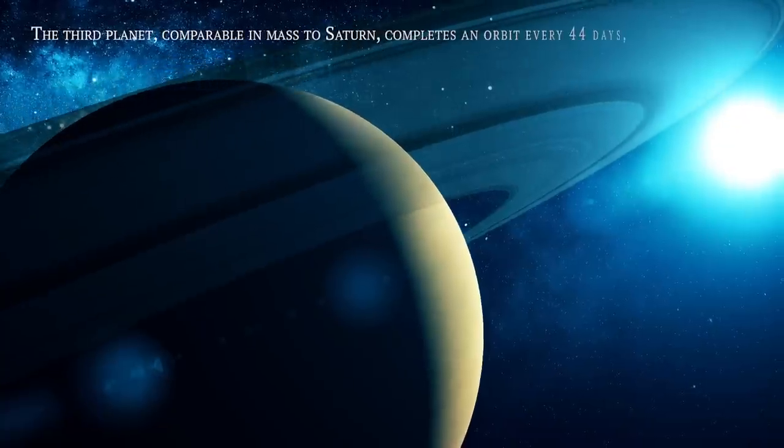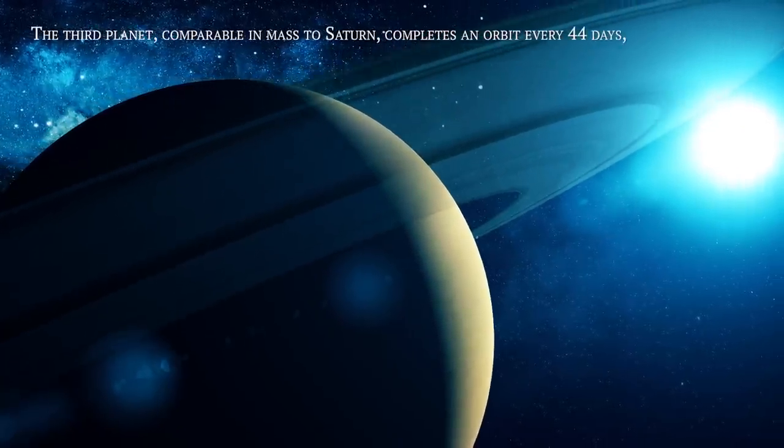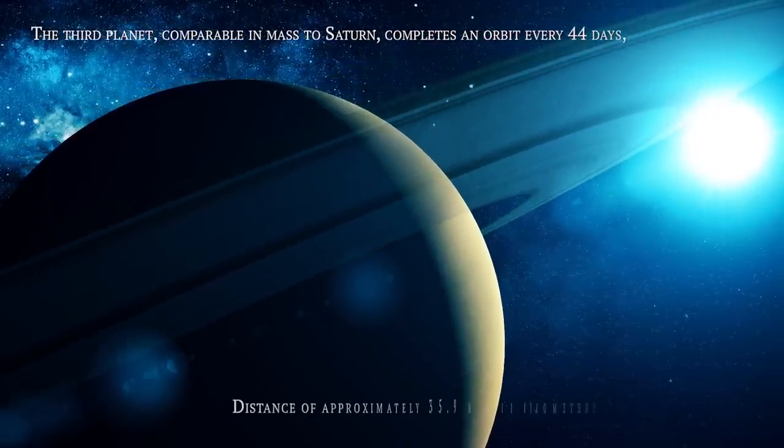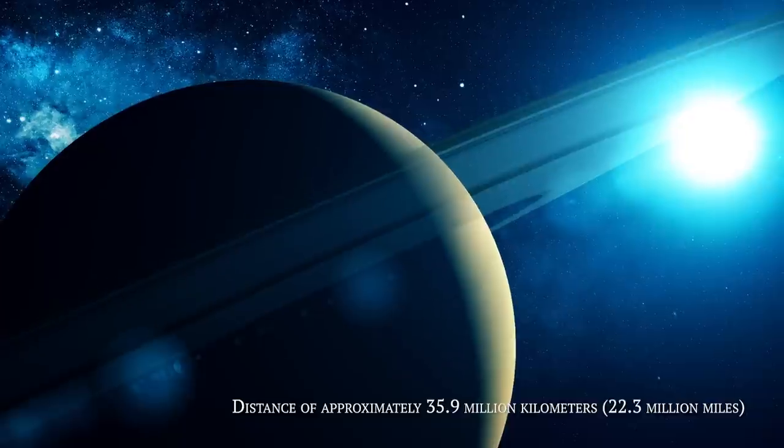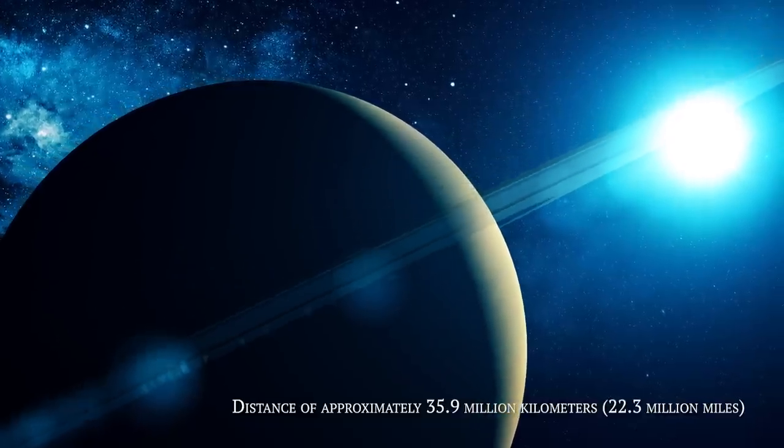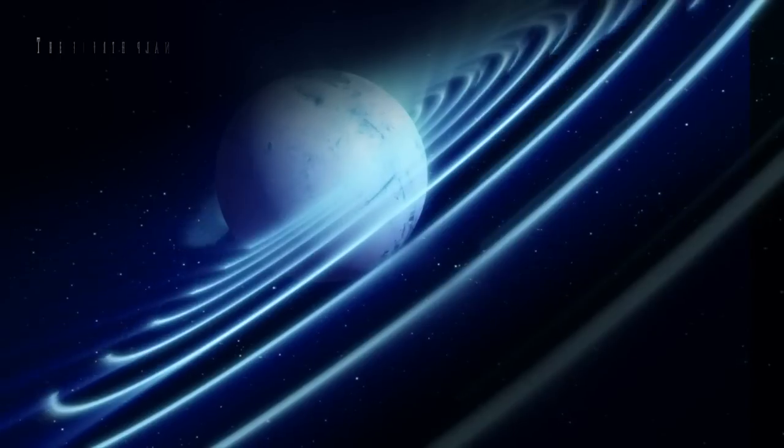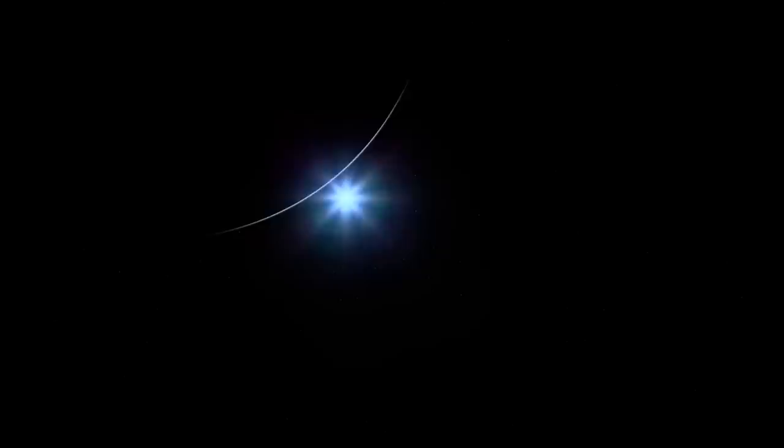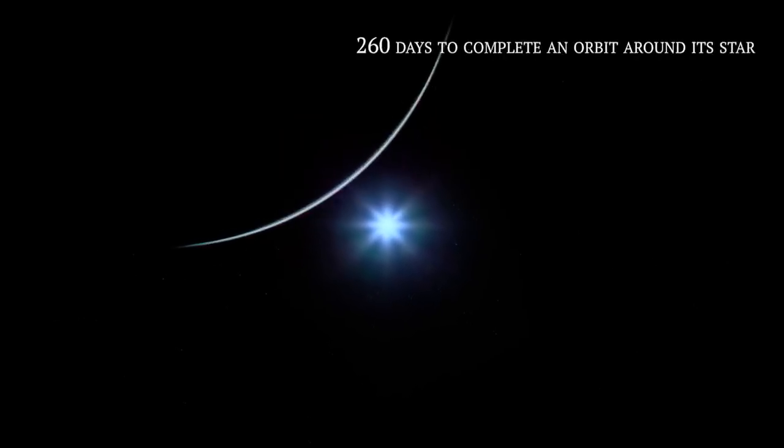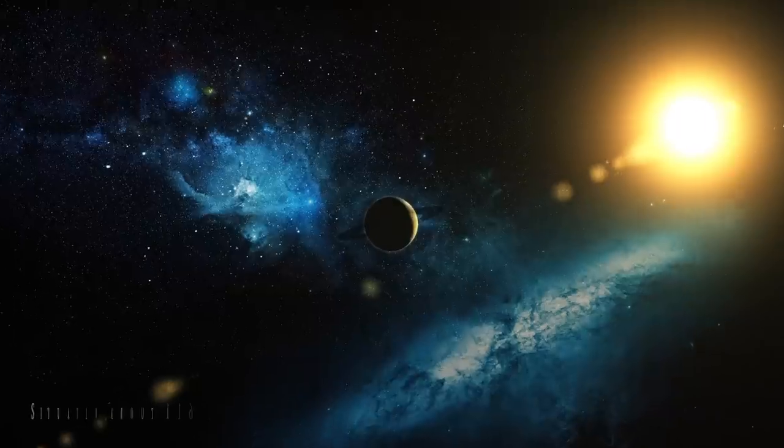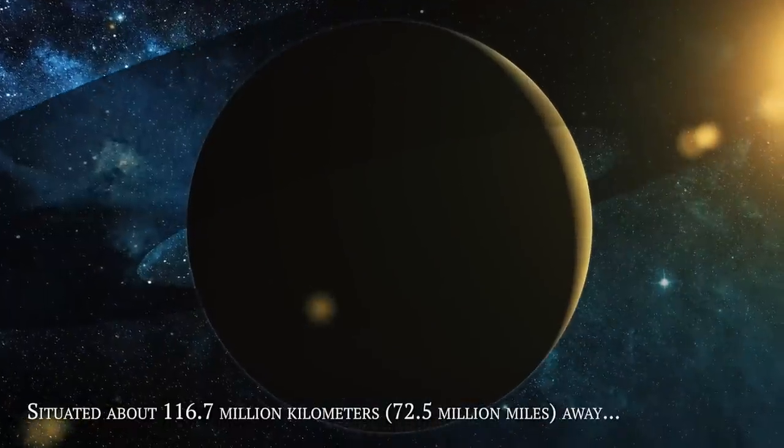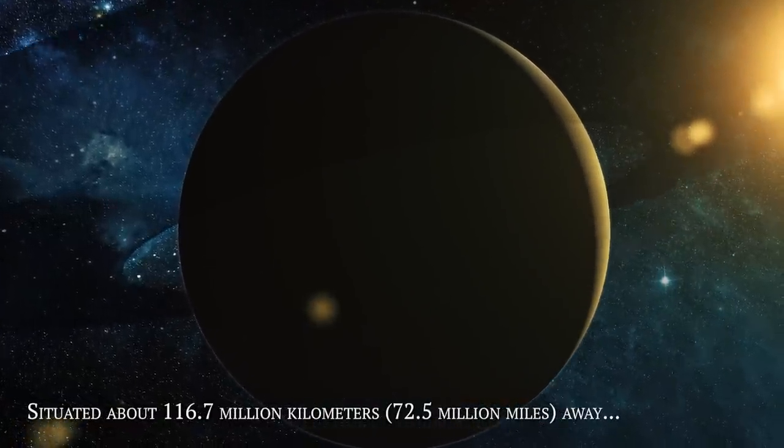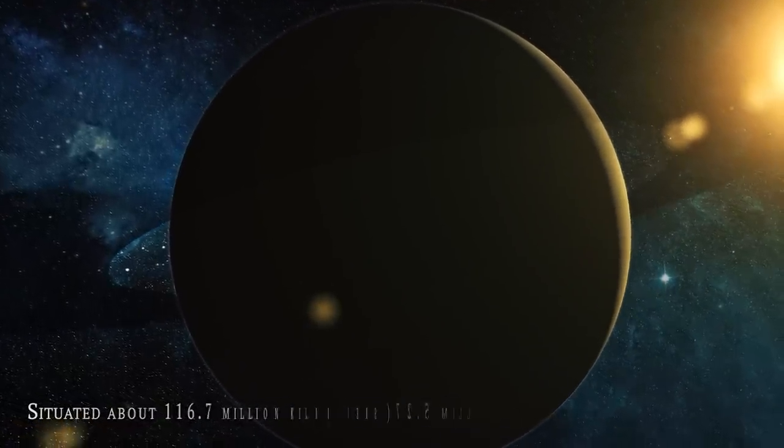The third planet, comparable in mass to Saturn, completes an orbit every 44 days at a distance of approximately 35.9 million kilometers. Lastly, the fourth planet, approximately half the mass of Saturn, takes 260 days to complete an orbit around its star, situated about 116.7 million kilometers or 72.5 million miles away.